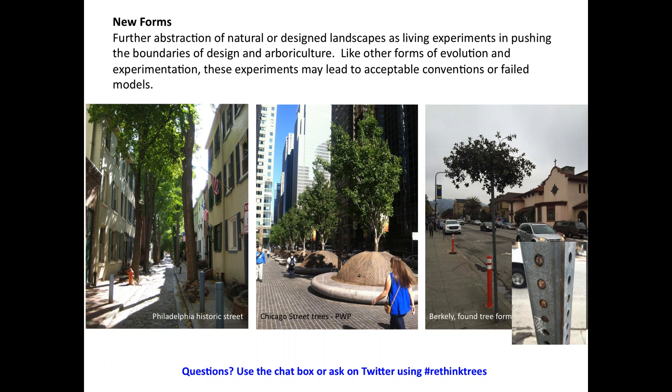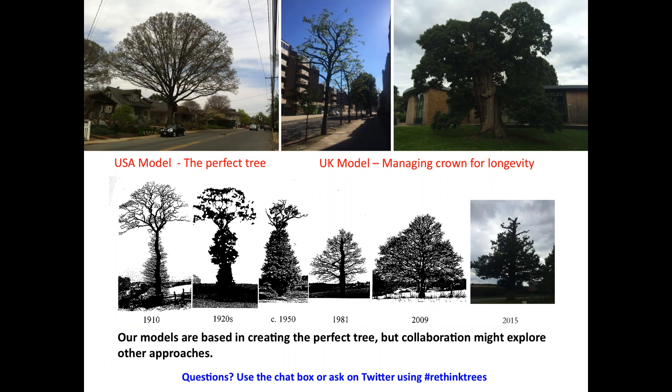Part of this problem is that in the United States we have a model of the perfect tree — what we think every tree should look like — and it's not reasonable to think they'll all turn out that way. In the UK, for example, they have a different model where they model for crown longevity, cutting trees down from the top to foster new growth at the bottom, creating a tree that lives longer but doesn't look like the perfect tree. Rethinking this model may be critically important.